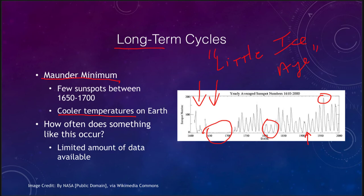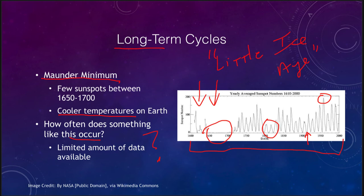We did see a corresponding decrease in temperatures on the Earth during the Maunder minimum, which then thawed as solar activity started to pick up again. How often does something like this occur? We have no idea — it's a big question mark, because we've only been able to really observe sunspots for about 400 years. We know there are times with less and times with more activity and a somewhat regular pattern, but we don't know over tens of thousands of years how often something like this would actually occur.